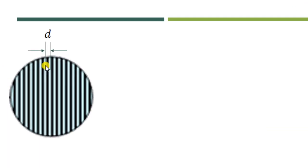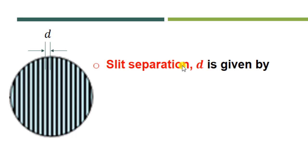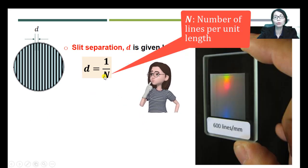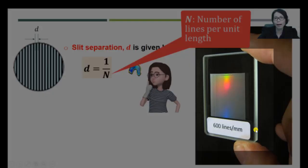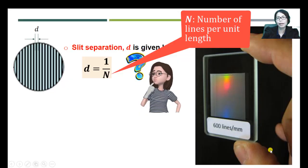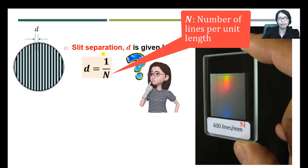The separation between two neighboring slits is what we call the slit separation, denoted by d. The slit separation is calculated by d = 1/N. For example, if a grating is labeled as 600 lines per millimeter, that value is referred to as N — the number of lines per millimeter — and we use it to find the slit separation.